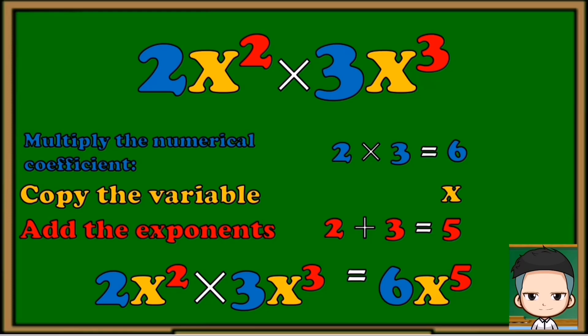So 2x squared times 3x cubed is equal to 6x raised to 5. It's as simple as that.